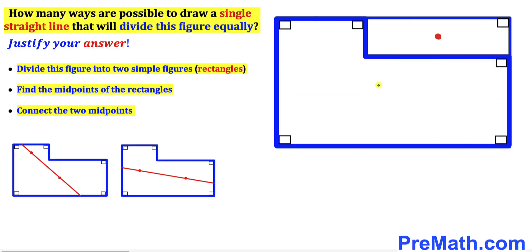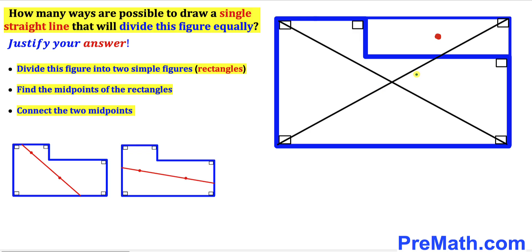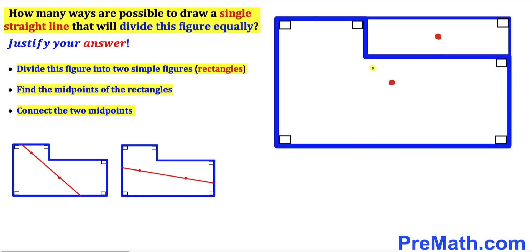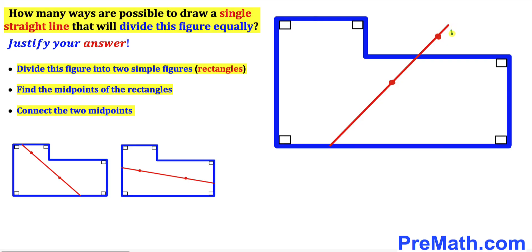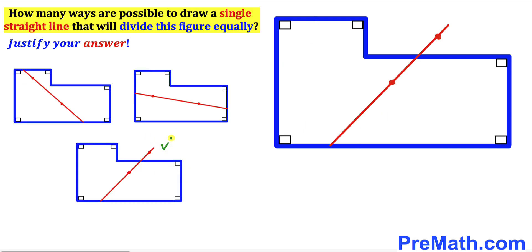Now let's focus on the big rectangle and find its midpoint as well. We draw the two diagonals for this big rectangle and they intersect at a point — that is our second midpoint. Connecting these two midpoints gives us a single straight line that divides the given shape into two equal parts. This is our third option.